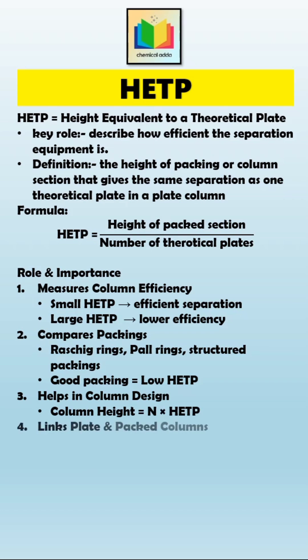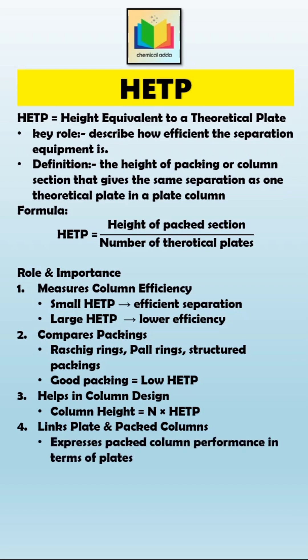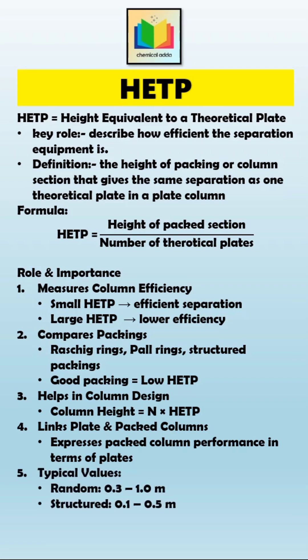Finally, HETP helps to connect plate columns and packed columns. With the help of HETP, we can express the performance of a packed column in terms of theoretical plates, which were originally defined for tray columns. Typical values of HETP are: for random packing, 0.3 to 1.0 meters, and for structured packing, 0.1 to 0.5 meters.